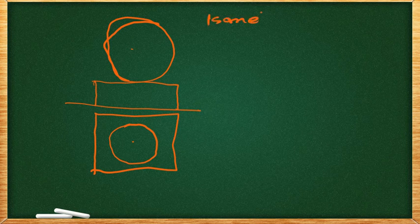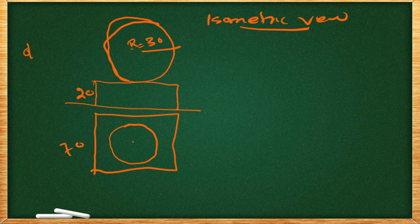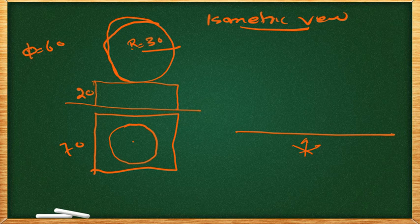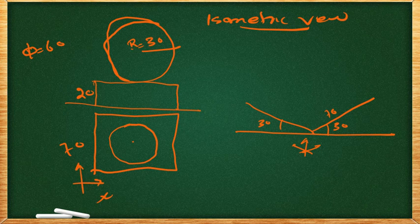For the isometric view, we use full-size scale. We draw a reference line and another line at 30 degree angle with a length of 70 mm. We set up the XY axis and the vertical axis to construct the isometric view of the combination.